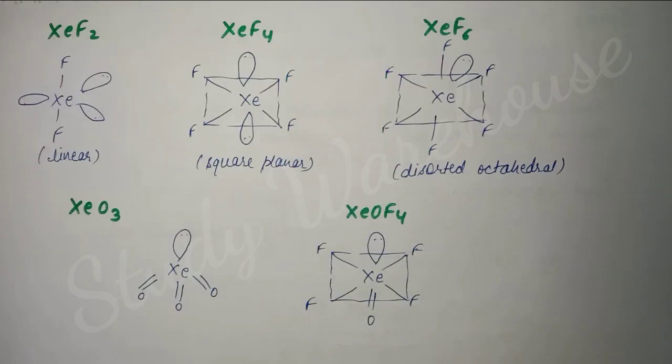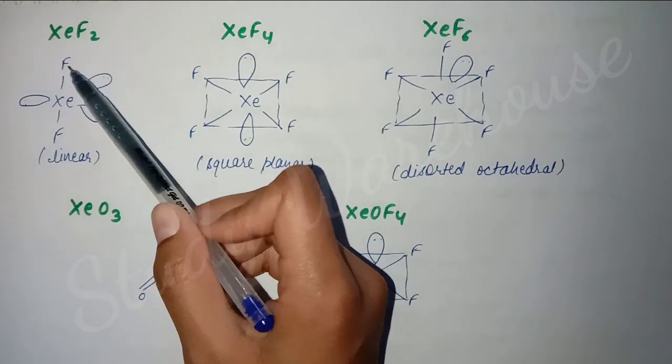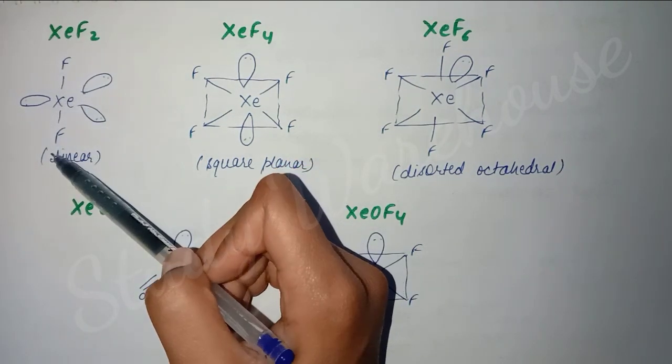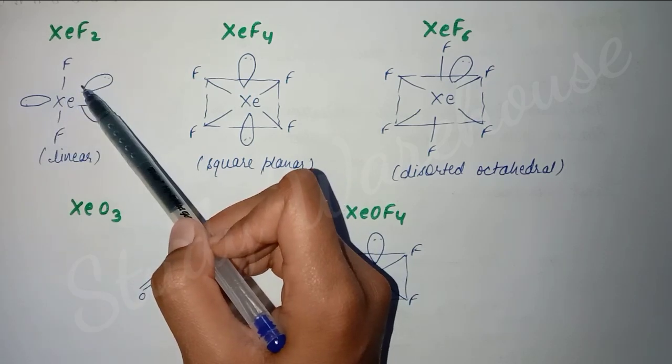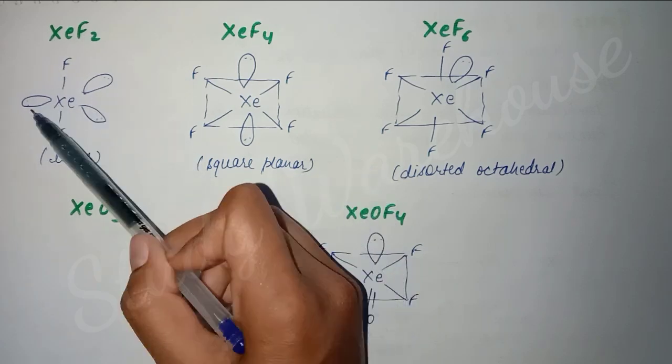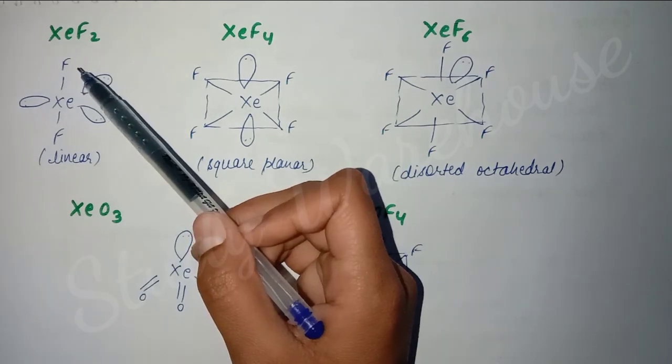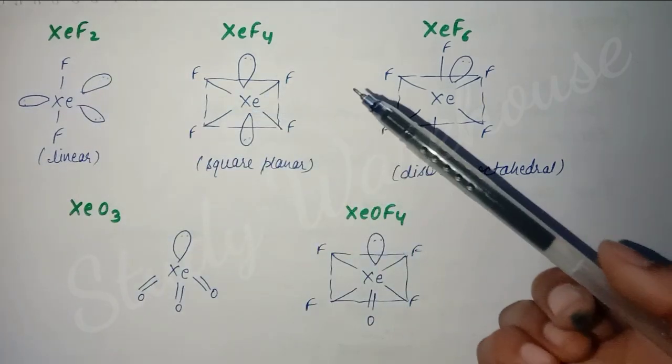Then we have the structures, which are very important because you'll be asked about their preparation methods, so you need to learn the reactions. Then their structure and what geometry they form. First, if we see XeF2, xenon is central and two fluorine atoms are combined with it. Xenon has eight electrons in the outermost shell, so it bonded with two, which means 6 remain - 6 means 3 pairs remain. So we show these 3 pairs like this, and its geometry will be linear.